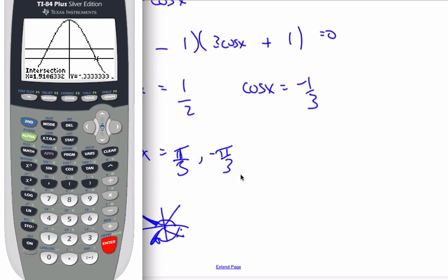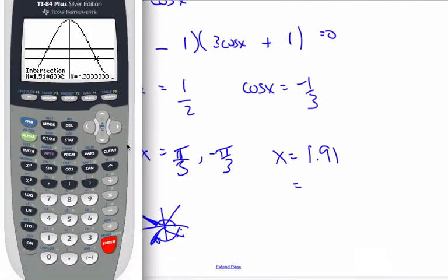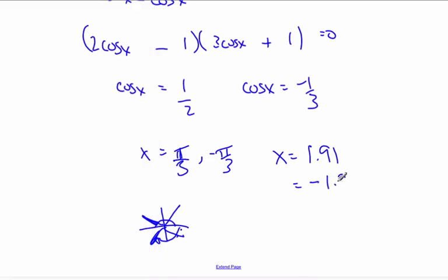Okay. And so my one value will be 1.91. X equals 1.91. And the other value will be, just based upon the symmetry of cosine, I know it's going to be negative 1.91. That will be the other value to three significant figures.